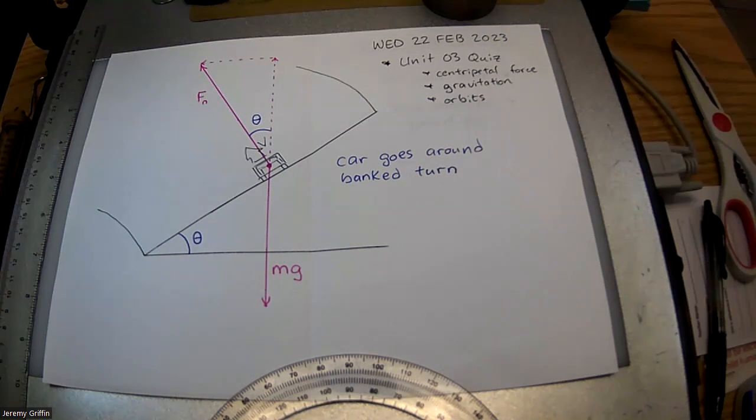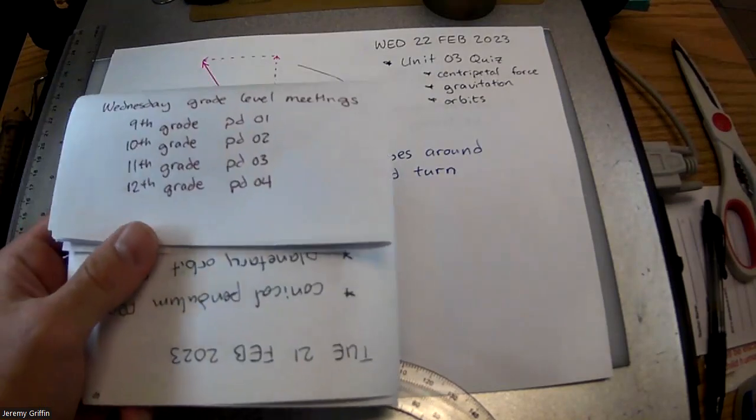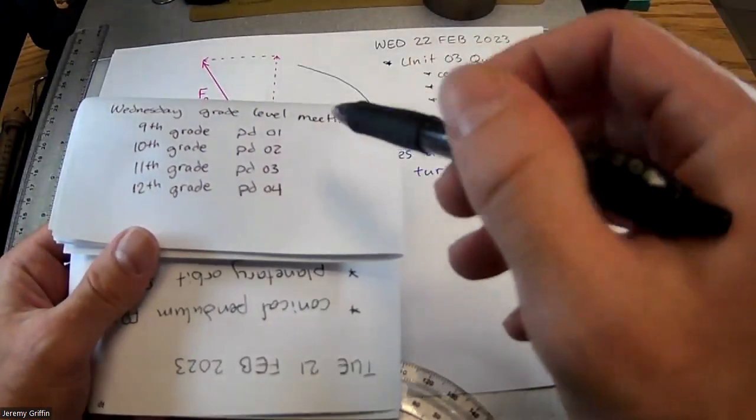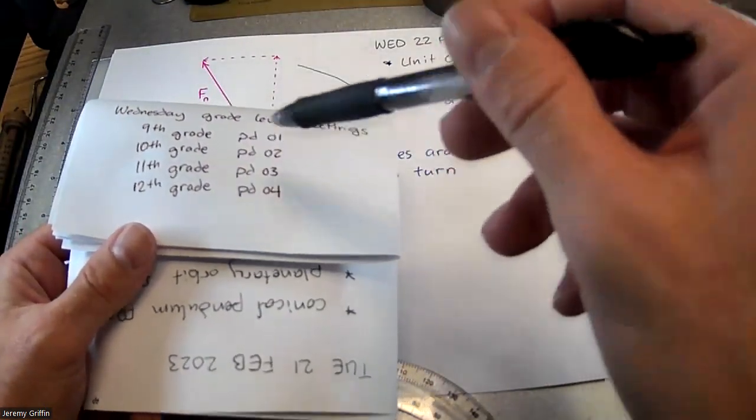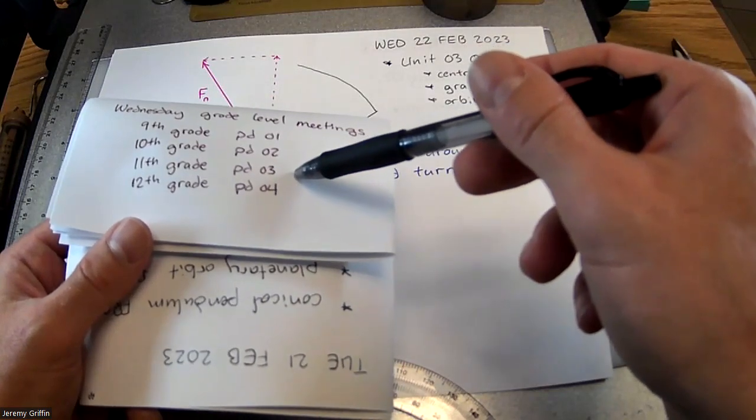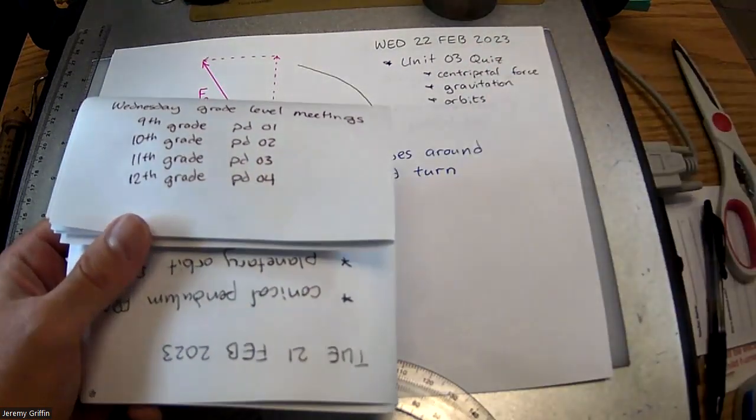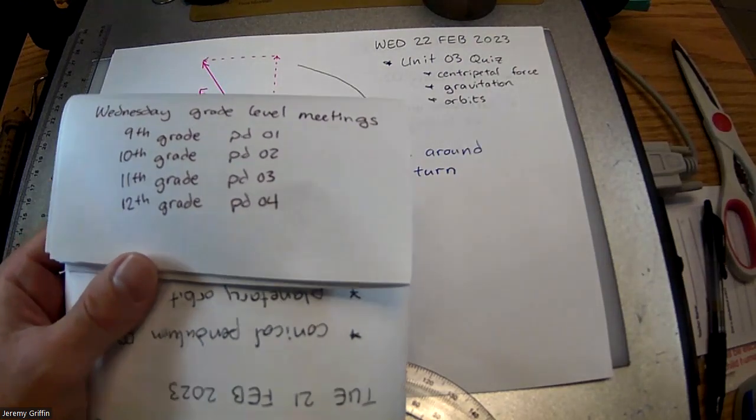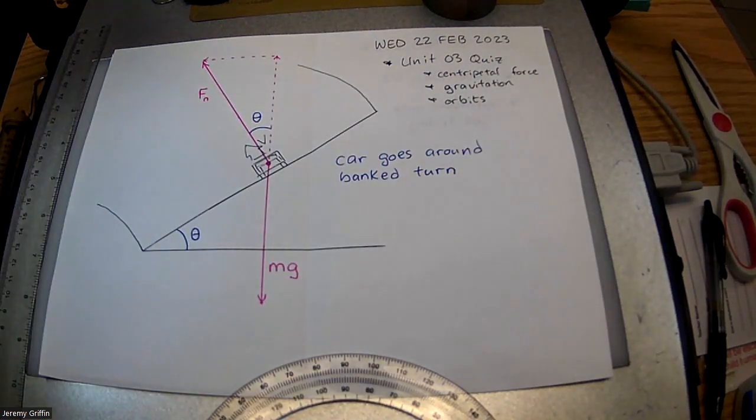Soon I'm going to open the AP Classroom for Unit 4 also. And then today there are these grade level meetings in the auditorium. Most of you guys are 11th grade, so that's going to be period 3, but if you're 10 or 12, then there you go. So grade level news, all right.